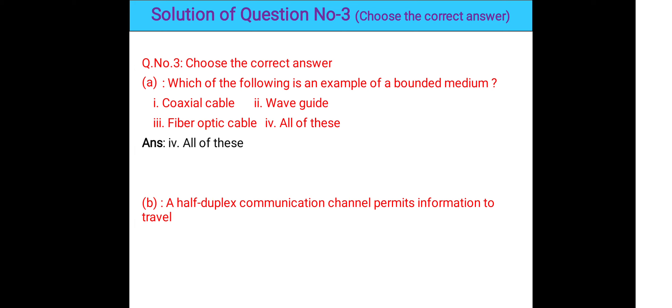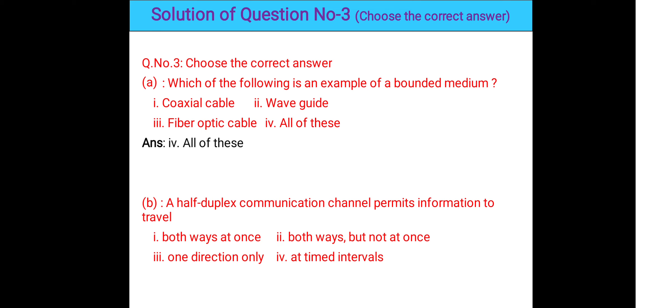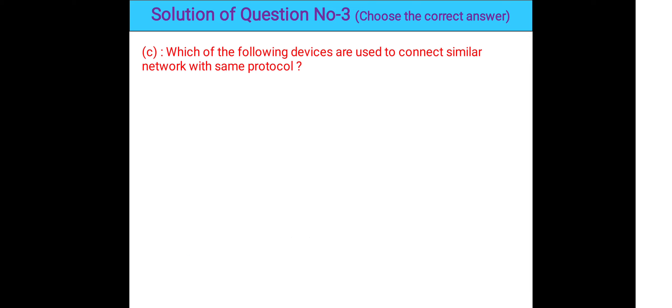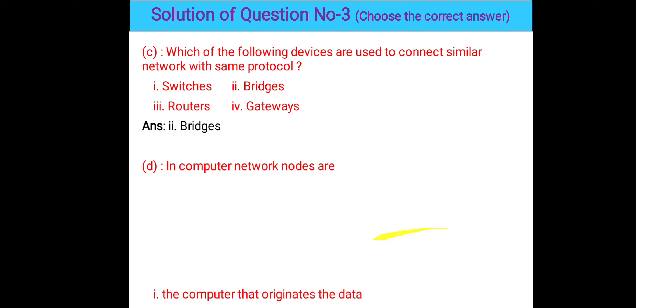Question 3b: Half duplex communication permits information to travel in both directions, but not at the same time — one direction at a time, at different time intervals. So option 2 is correct. Question 3c: Which device is used to connect similar networks with the same protocol? The answer is bridges — bridges connect similar networks using the same protocol, so option 2 is the correct answer.